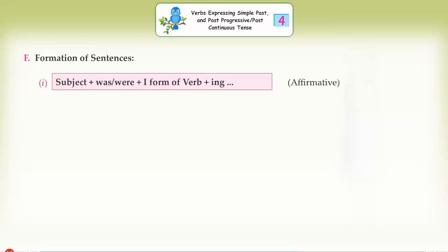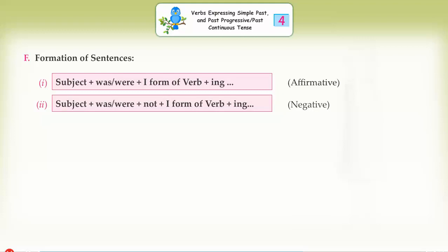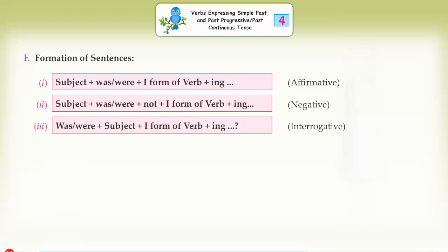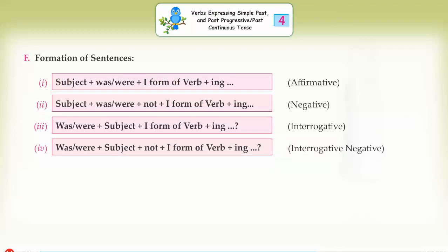Formation of sentences. First: Subject plus was/were plus first form of verb plus -ing — Affirmative. Second: Subject plus was/were plus not plus first form of verb plus -ing — Negative. Third: Was/were plus subject plus first form of verb plus -ing — Interrogative. Fourth: Was/were plus subject plus not plus first form of verb plus -ing — Interrogative negative.